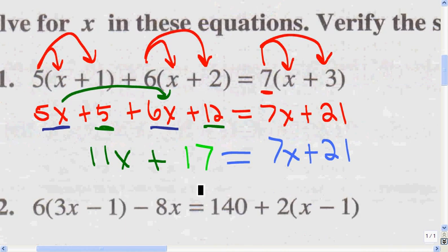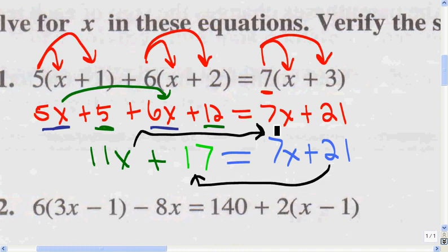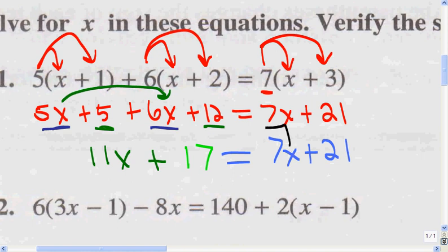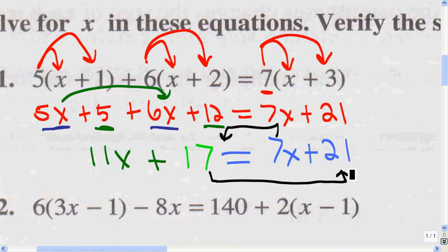Now that we've combined, we're going to transpose. I could move the 11x over to the right and the 21 over to the left, or I could move the 7x over to the left and the 17 over to the right. It doesn't matter which side of the equal sign you put the knowns or the unknowns — it just matters that you use the right signs. I'm going to move the 7x over here because that will give me a positive x variable, and move the 17 over here to keep things positive.